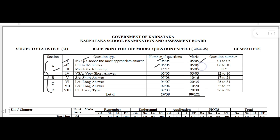The third main is match the following type questions. The star in the blueprint indicates a match the following type question. Here one question consists of five sub-questions, all are compulsory, each carries one mark — total five marks. The fourth main is VSA, means very short answer type questions — one mark type questions. Here also five questions are there, all compulsory, each carries one mark — total five marks.